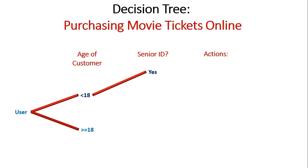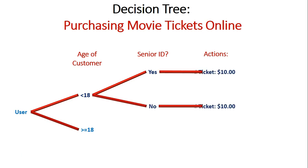Whether or not they have a senior ID doesn't matter, because in a sense they can't have a senior ID since they're under the age of 18. So regardless, just by being under 18 they're going to get charged a child ticket of $10.